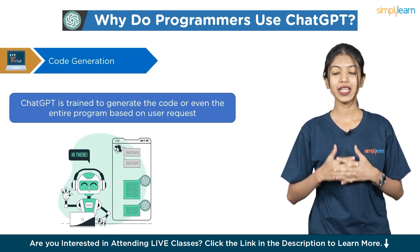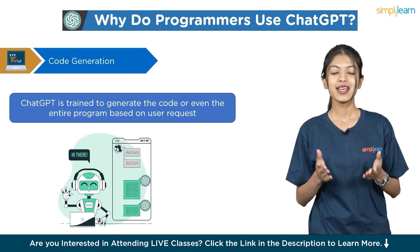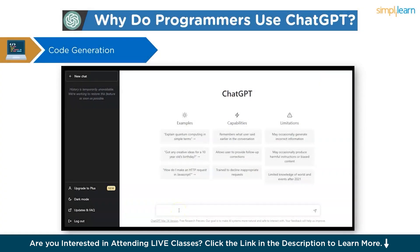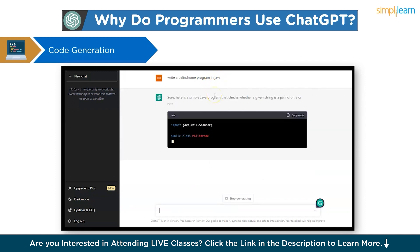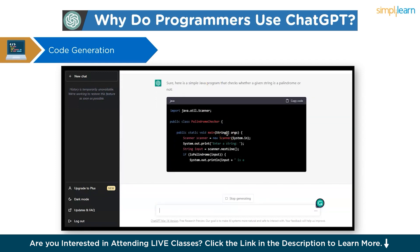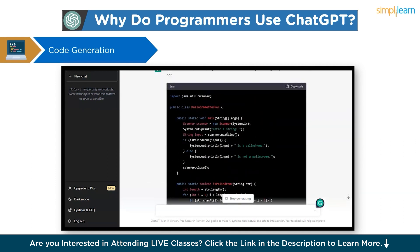ChatGPT is trained to generate code or even entire programs described in natural language. You specify what you want a program to do, and ChatGPT generates the relevant code. For example, opening ChatGPT and typing 'write a palindrome program in Java' — using the Java programming language, it generates the whole program.